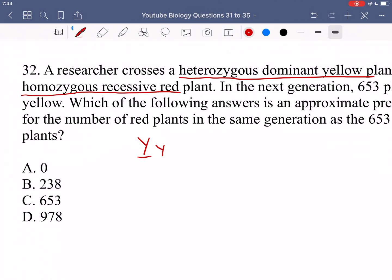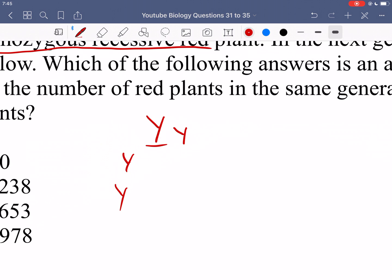Since the dominant one is going to be present, it's going to make the plant yellow if it's present. This is the heterozygous dominant plant. And then the other one is the homozygous recessive plant, so it has two copies of the recessive allele. And then when we cross them over in our Punnett square, the resulting offspring that we get look like this.